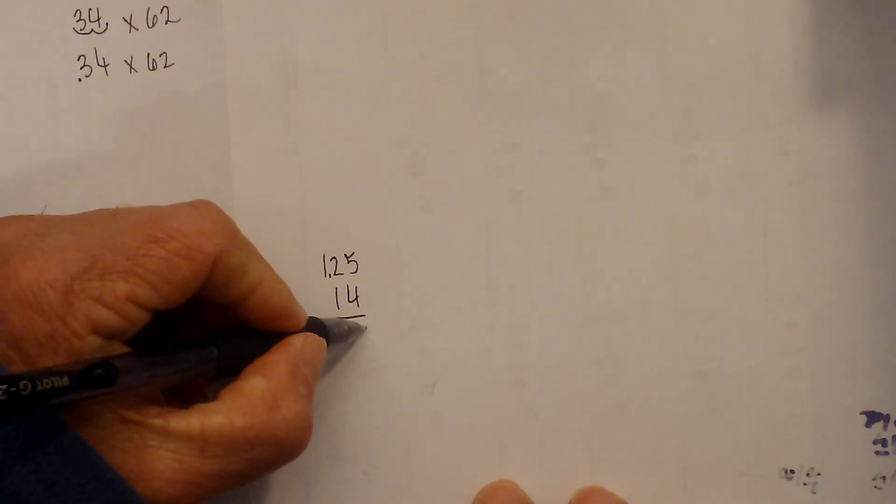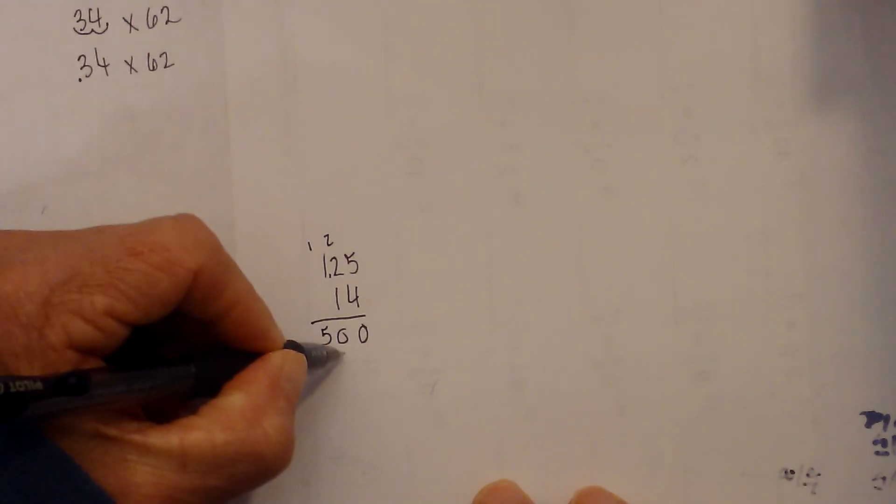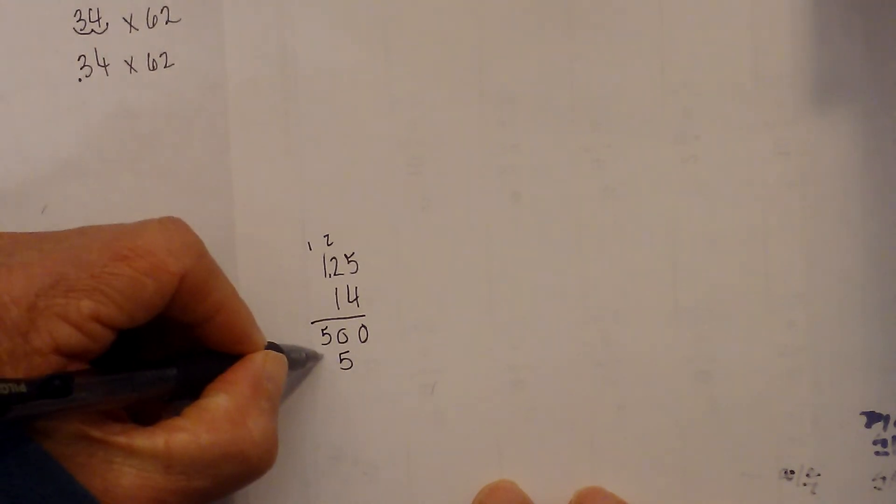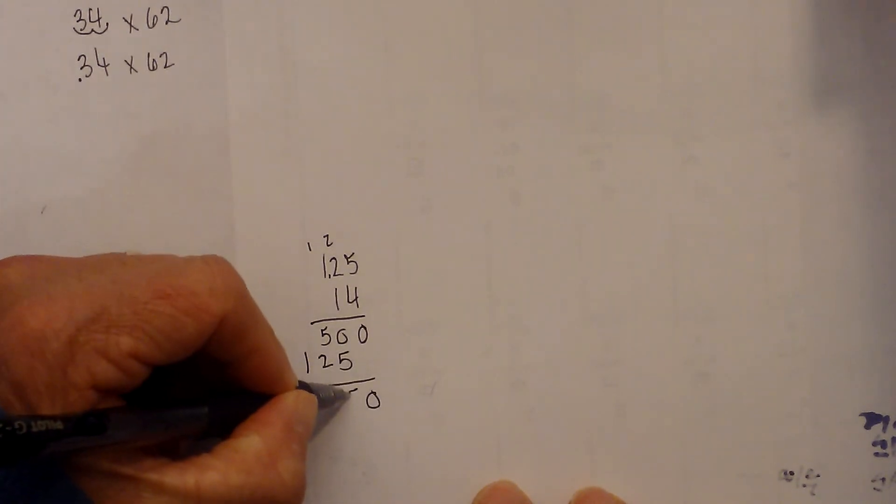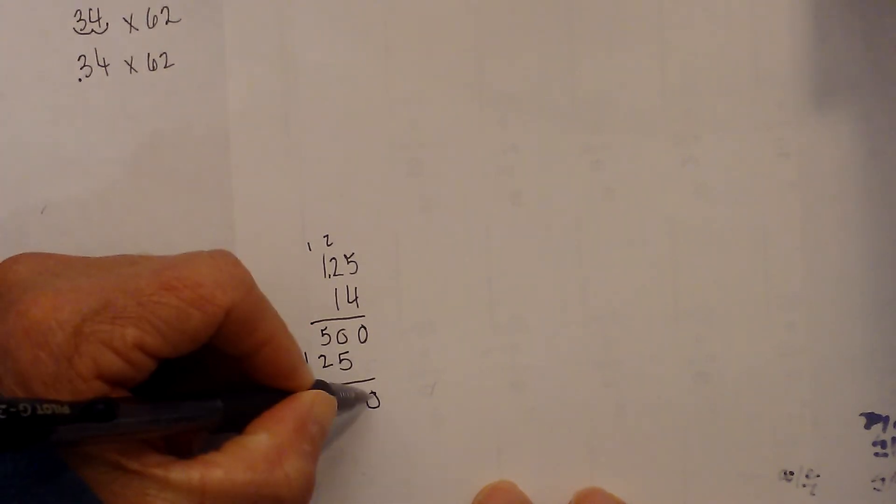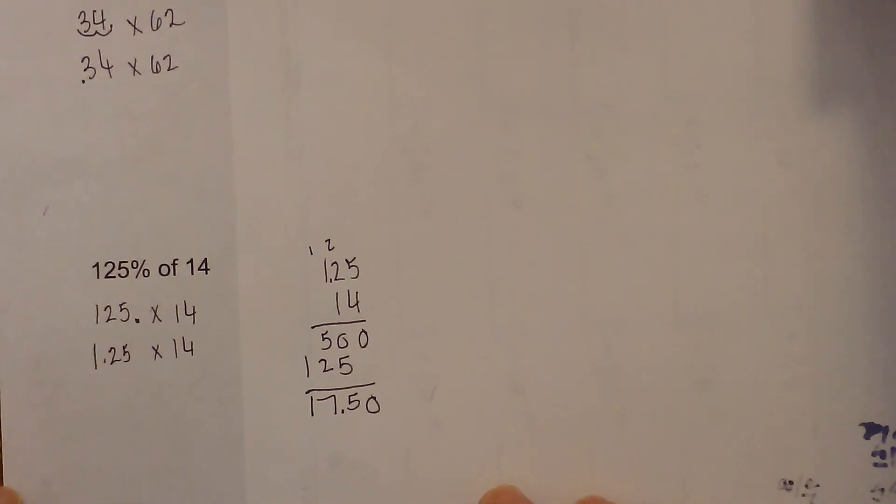So that becomes 20. Carry the two. That becomes 10. Carry the one. That becomes a five. Then we have 5, 2, 1. Bring down the zero. 5, 7, 1. Move the decimal places 2 to the left. So we have 17.50.